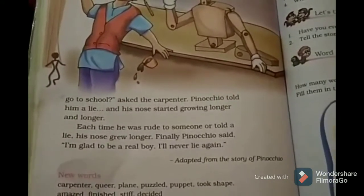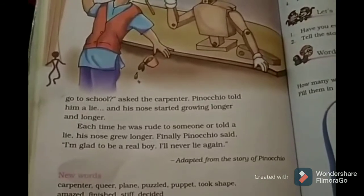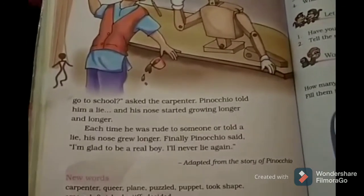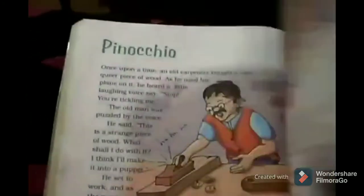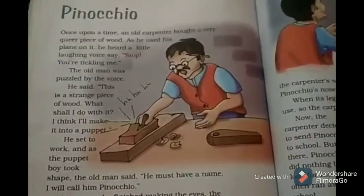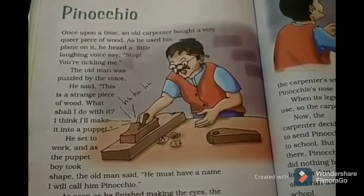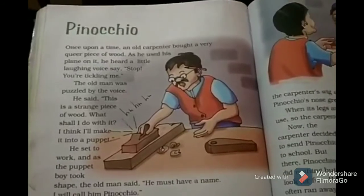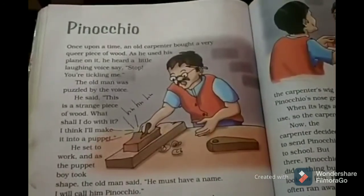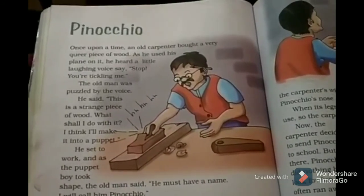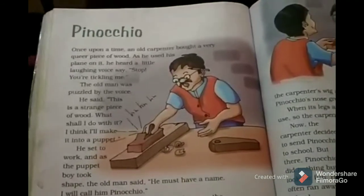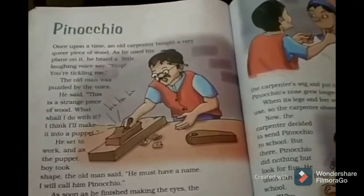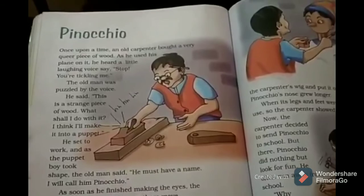The old carpenter asked him why he didn't go to school and pay attention. He was quite frustrated with the puppet. At last, Pinocchio realized his mistake and promised the carpenter — and himself — that he would never lie again and would behave well at school and everywhere else. The learning point from this story is: telling a lie will always make you uncomfortable. Honest people are always respected. Apply that in your life, students. Thank you, hope you enjoyed the video — don't forget to subscribe, like, and share!